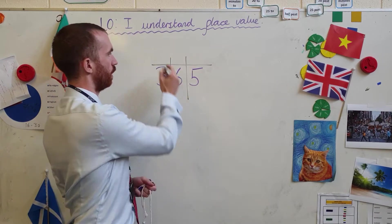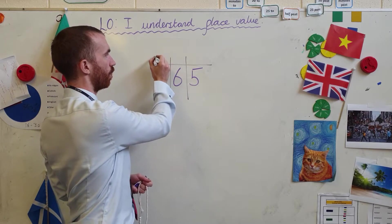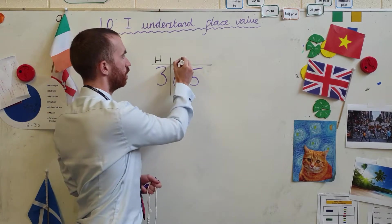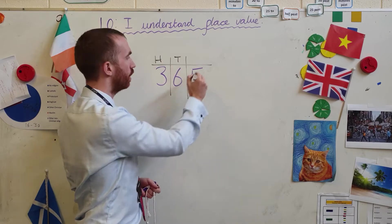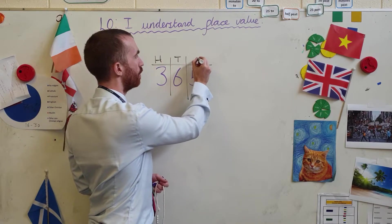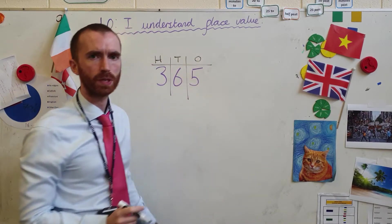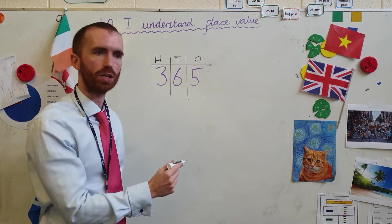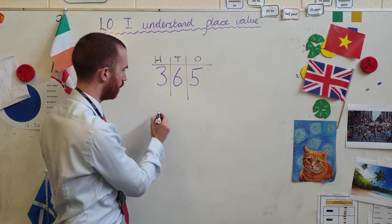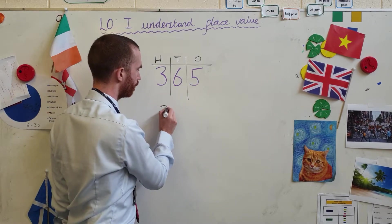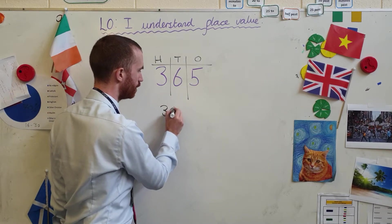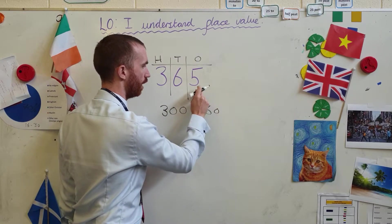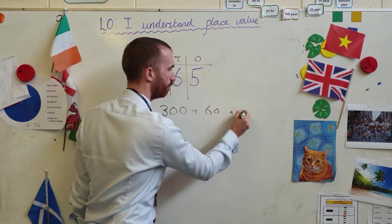And each of these — here we've got 300, so that's worth hundreds. This is 6 tens, and this is 5 ones. So what does that look like? Well, if I break down the number 365, it's made up of 300, 60, and 5.